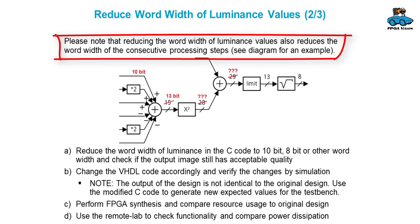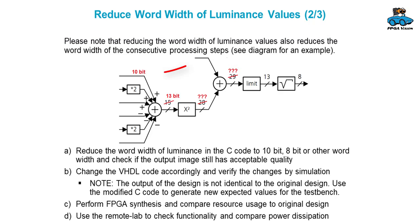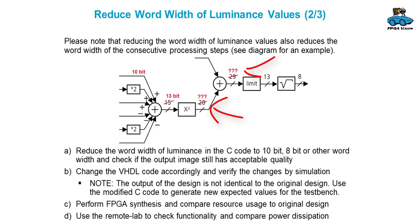When you reduce the word width, also the word width of the next steps in the processing are reduced. So if you reduce the luminance to 10-bit, also the result of the Sobel filter will go to 13-bit, and so on.